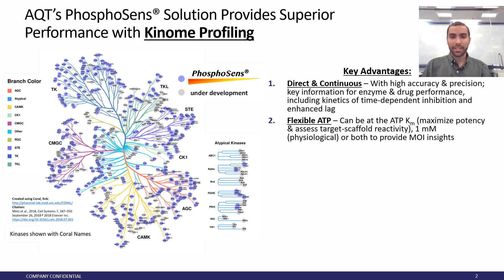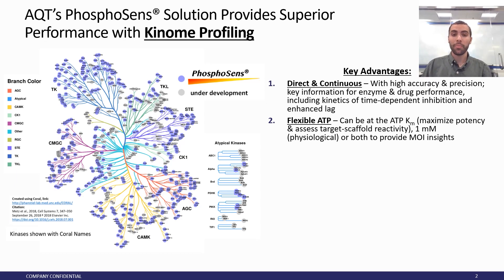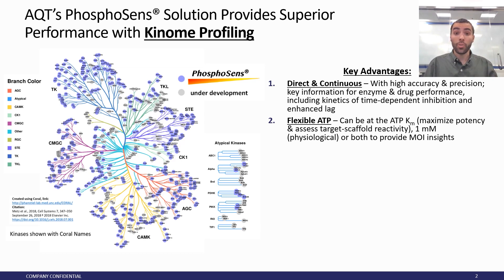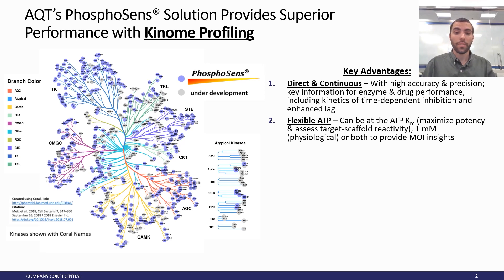Additionally, we have flexible ATP concentrations, so we can test at a very low ATP, such as ATP-KM, and also at one millimolar to get a more physiological condition for your kinases. This can help predict how your compounds will behave in cell-based assays and also in patients eventually.